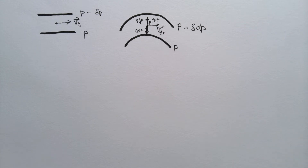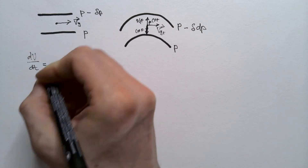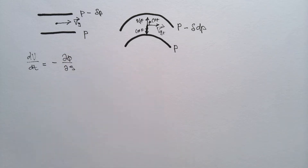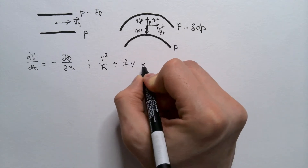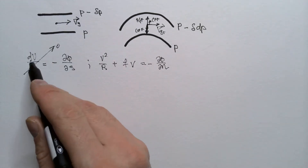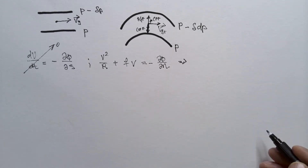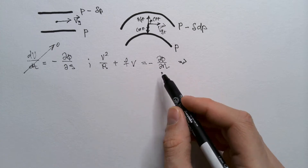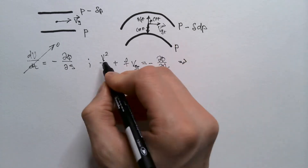To quantitatively investigate gradient wind, we start with the horizontal momentum equations in the natural coordinate system: dV/dT = −∂Φ/∂S, and V²/R + FV = −∂Φ/∂N. Gradient wind is a balance, which means there are no accelerations along the trajectory, so dV/dT = 0. We can then solve the second equation for V, which is the gradient wind velocity.